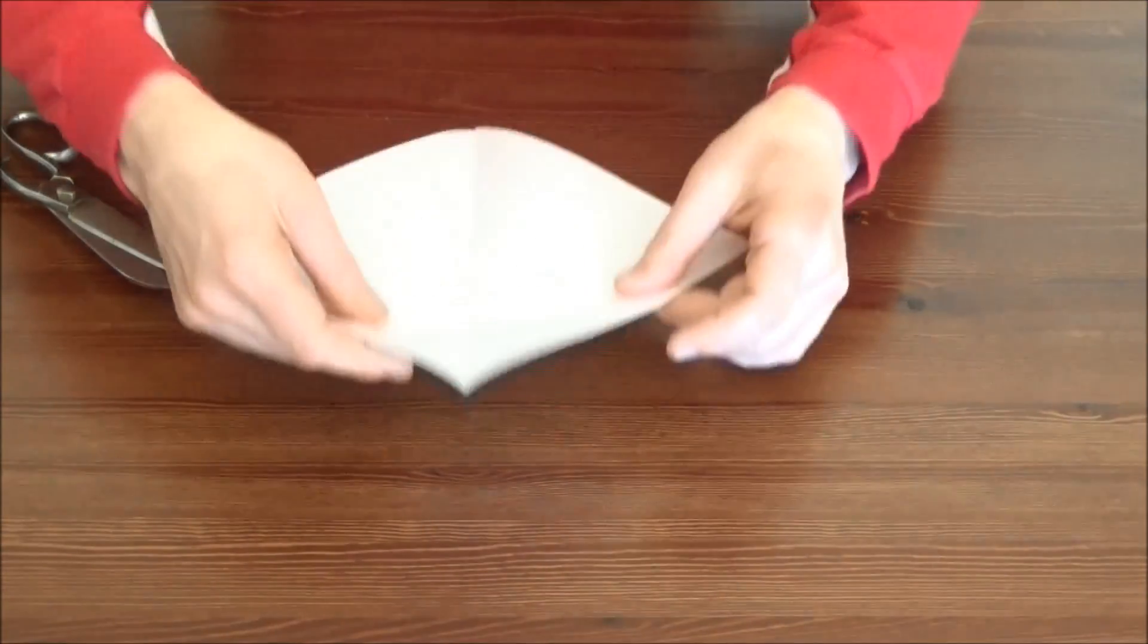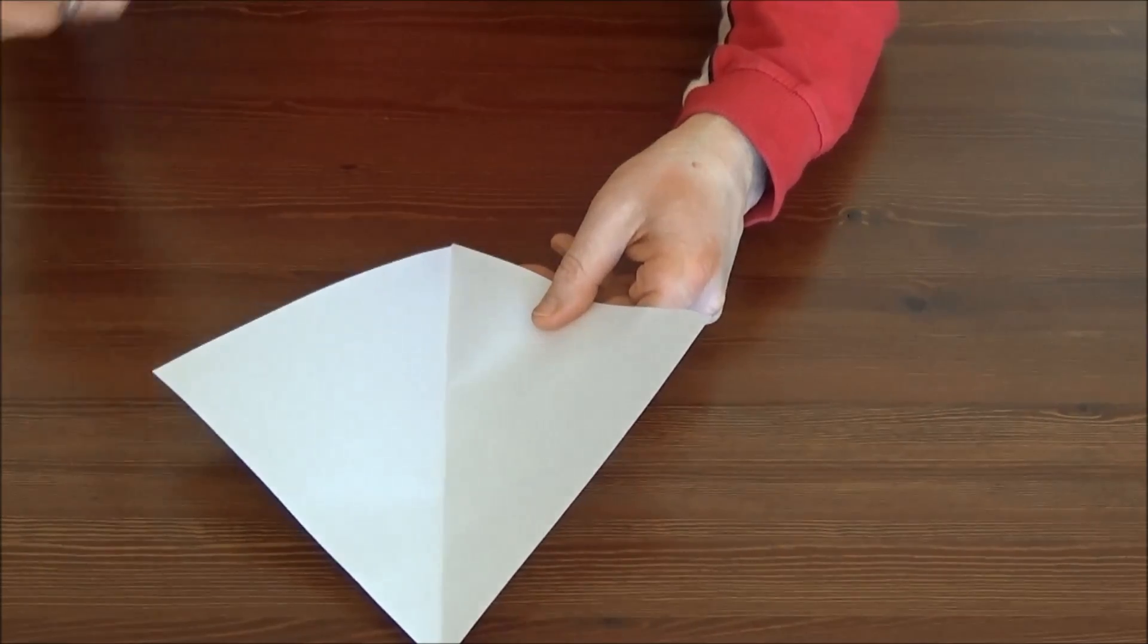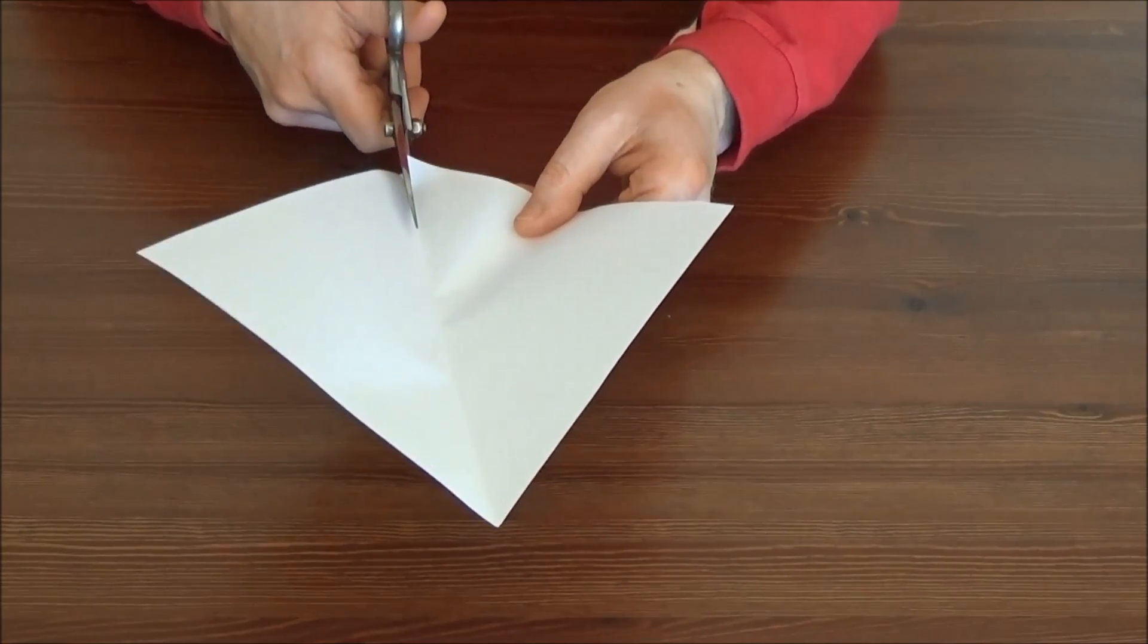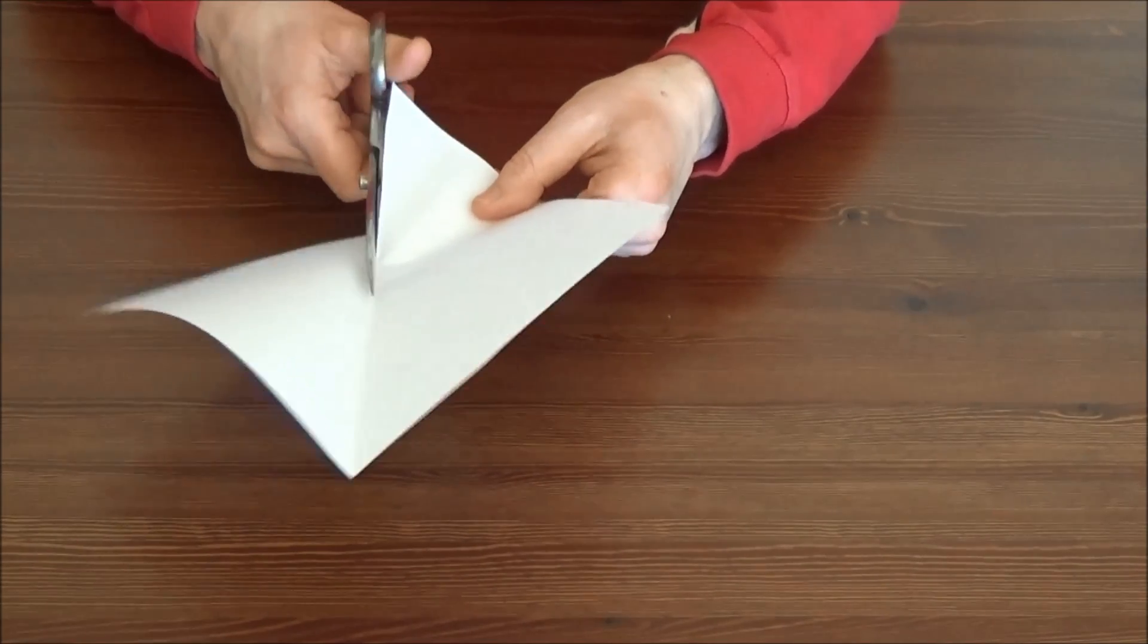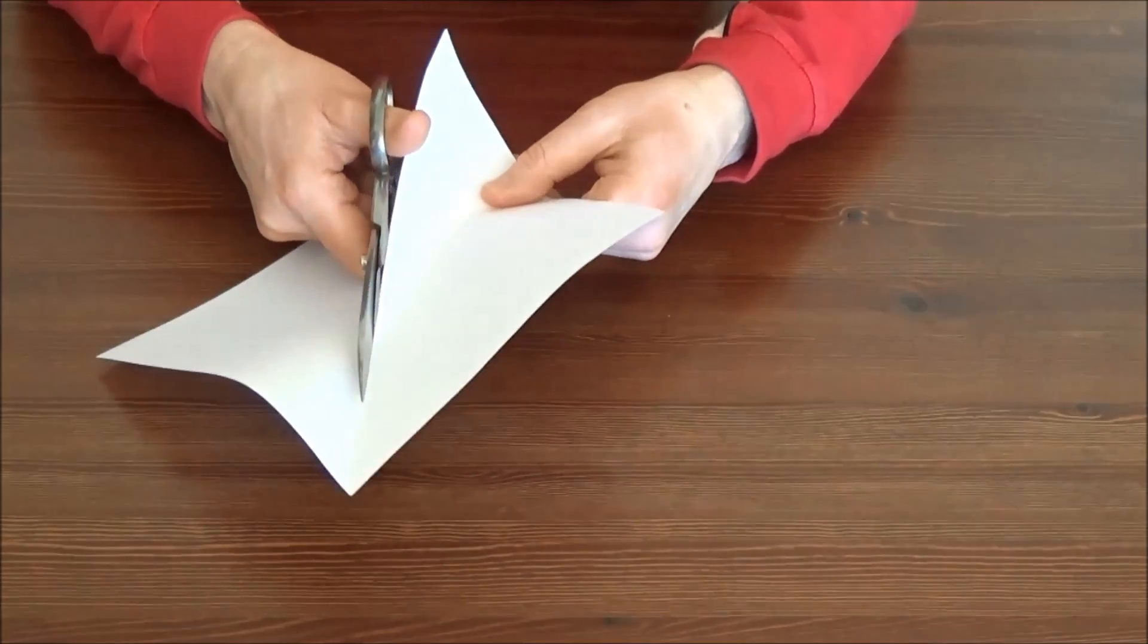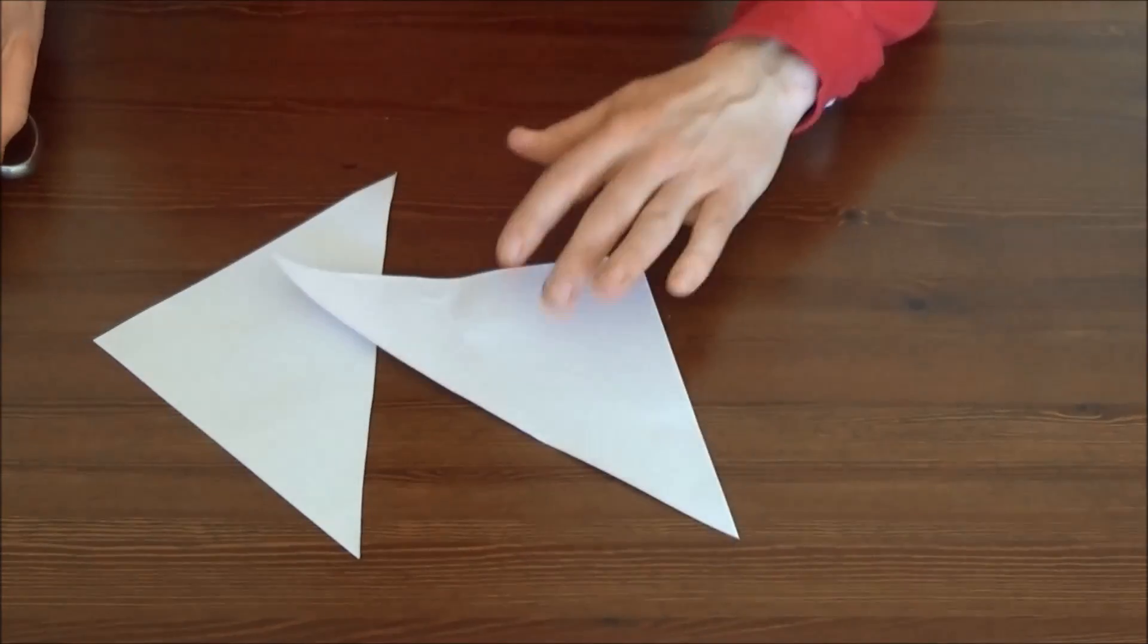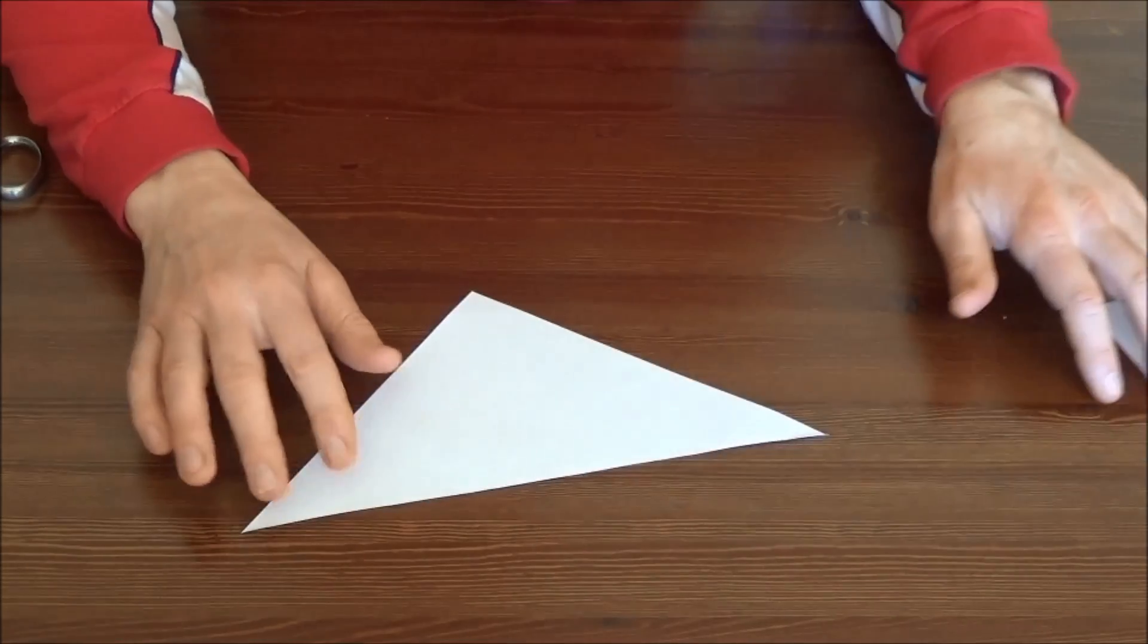You are left with a square. Down the center of the square you have a crease. Along this crease you cut, and as you can see, you've created two large triangles. Put one triangle to the side.